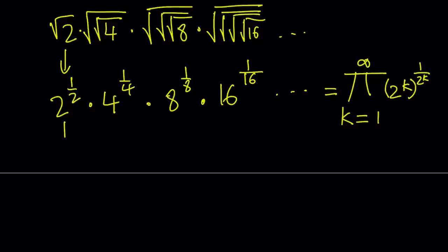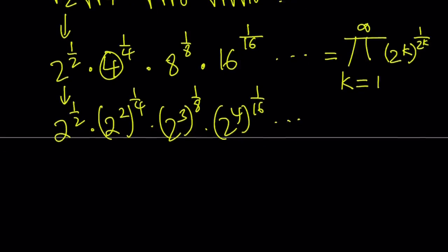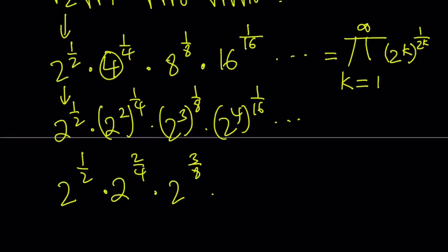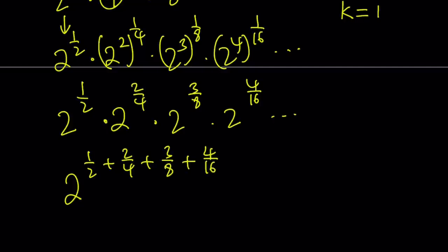Here it's important not to simplify any of the exponents. Since 4 is 2 squared, we write this as 2 squared to the power 1/4. This becomes 2 to the third to the power 1/8, then 2 to the fourth power to the power 1/16, so on and so forth. When you multiply, don't simplify the exponents: 2 times 1/4 gives 2/4, then 2 to the power 3/8, then 2 to the power 4/16. Since all the bases are 2s, we add the exponents: 1/2 plus 2/4 plus 3/8 plus 4/16, so on and so forth.